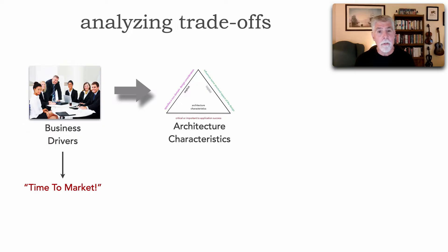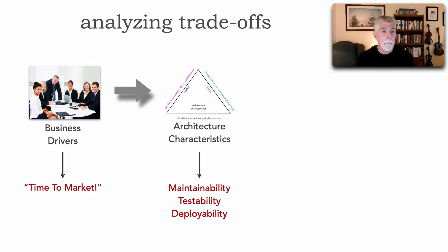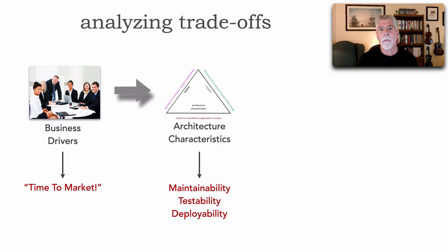Time to market translates to high levels of maintainability, testability, and deployability. Maintainability is the ease and speed of being able to make changes in our code. Testability is the ease and completeness of testing. Deployability is about the frequency of deployment, the ceremony involved, and how much risk there is. All three are needed to support time to market, which is a composite characteristic called agility — the ability to respond quickly to change.